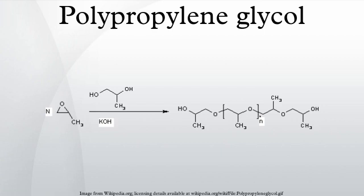PPG is used in many formulations for polyurethanes. It is used as a rheology modifier. PPG is used as a surfactant, wetting agent, and dispersant in leather finishing. PPG is also employed as a tuning reference in mass spectrometry. PPG is used as a primary ingredient in the manufacture of paintballs.